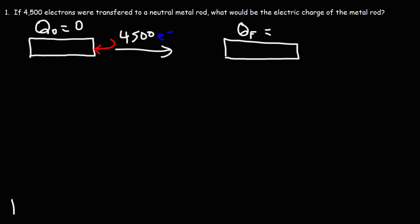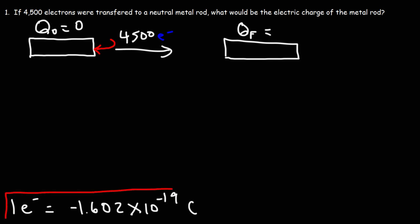What you need to know is that one electron has a charge of negative 1.602 times 10 to the negative 19 coulombs. We can use this as our conversion factor. So let's start with what we're given, which is 4,500 electrons.